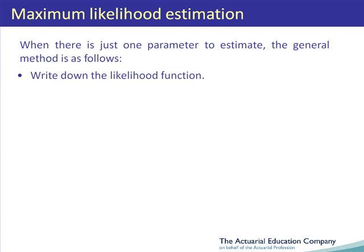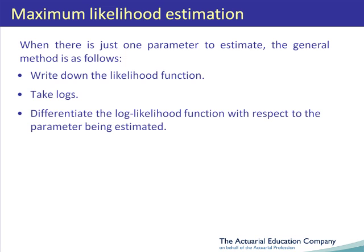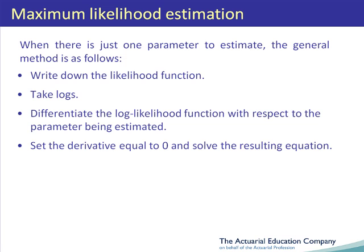However, it's often easier to differentiate the log of the likelihood function than the likelihood function itself. The log function is a monotonic increasing function, so the log likelihood is maximized at the same point as the likelihood function itself. So step two is to take the natural log of the likelihood function. Then we differentiate, set the derivative equal to zero, solve for the turning point, and check that it is a maximum using the second derivative.